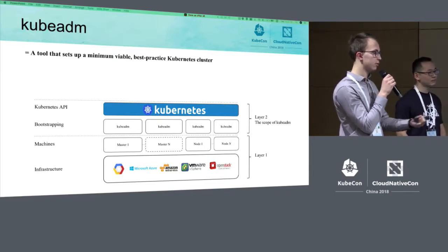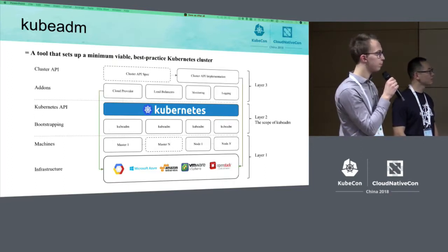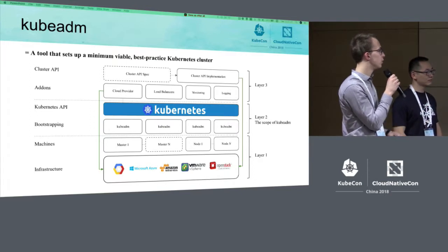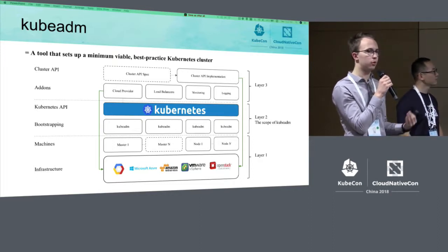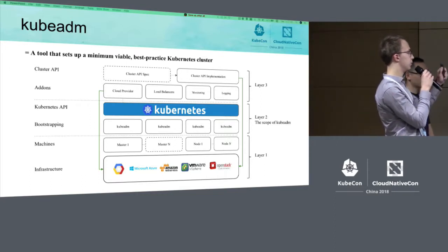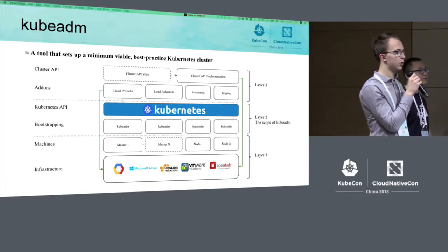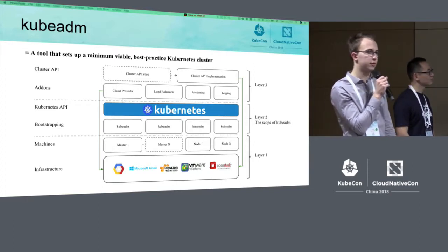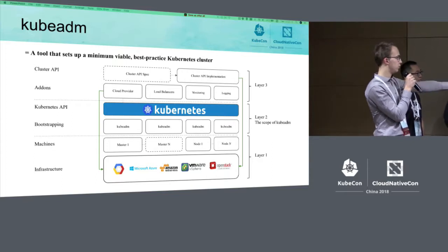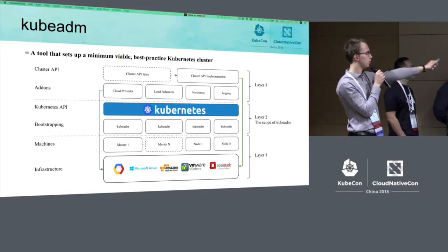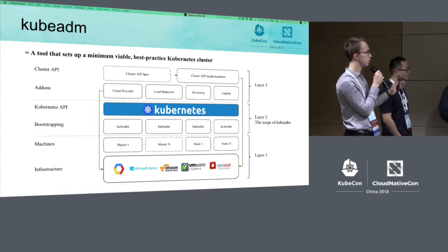So the Cluster API implementation shows that kubeadm is the middle layer — the toolbox you can use to create clusters. There's a Cluster API spec developed by the community, but then you create an actual implementation. For example, I could create my own Raspberry Pi stack Cluster API implementation that boots up my Raspberry Pi on the desk. That would provision infrastructure and machines, and locally on every machine kubeadm is executing either using init or join. Then we have Kubernetes, then Cluster API which is a controller running in the cluster.